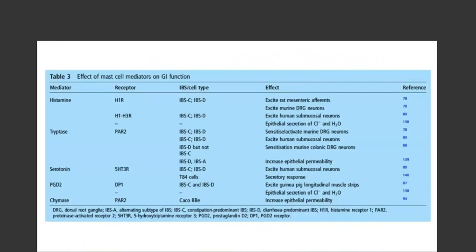A table from that review article lists key mediators including histamine, tryptase, serotonin — one of the neurotransmitters produced by mast cells — and prostaglandins, particularly PGD2. There are four different types of histamine receptors, several expressed in the gut with somewhat different effects, demonstrating how histamine likely plays a key role in IBS or IBS-related symptoms. Histamine can potentially play a role in both constipation-dominant and diarrhea-dominant IBS, and in some cases IBS mixed.